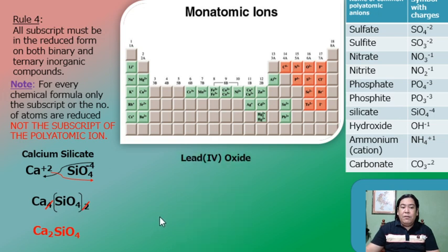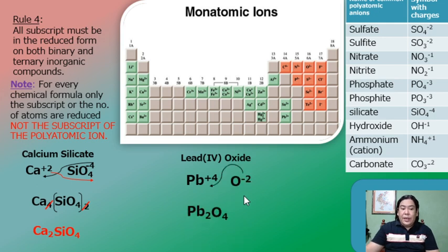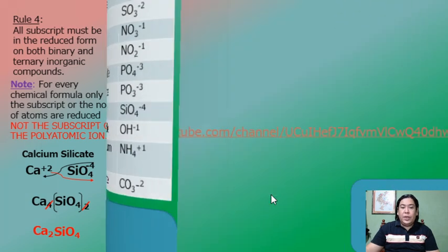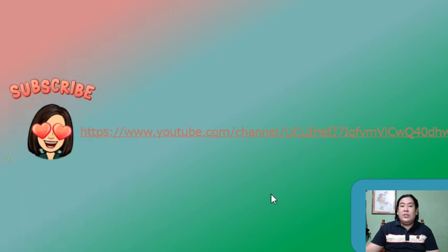Next example: lead(IV) oxide. Pb⁴⁺ and O²⁻. After crisscrossing, the subscripts are 2 and 4, both divisible by 2. Reducing gives the final formula PbO₂. If you have any questions, just leave a comment below and don't forget to subscribe to our YouTube channel. Thank you.